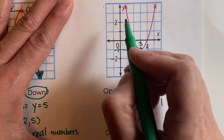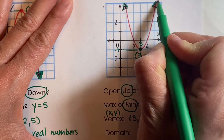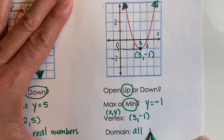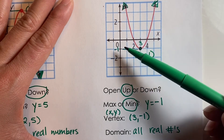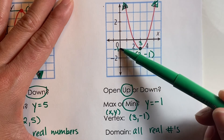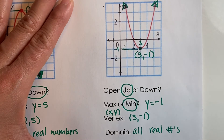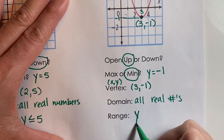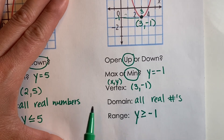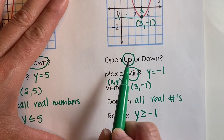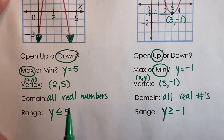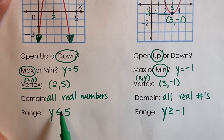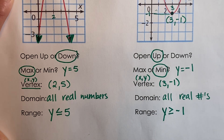The domain has arrows at the end of the graph, so the x values are not restricted — it is all real numbers. The range depends on the y value from the vertex. It starts at negative 1 and goes up, so all values above are greater than or equal to, giving a range of y is greater than or equal to negative 1. When you have a minimum and your graph opens up, your range begins with y is greater than or equal to. When you have a maximum and your graph opens down, you get y is less than or equal to — always using the y value from your vertex.